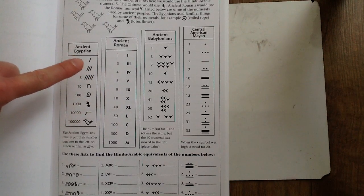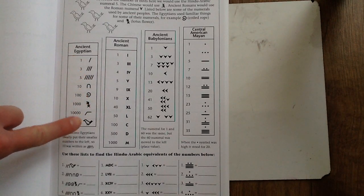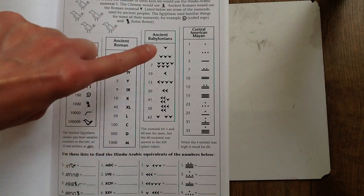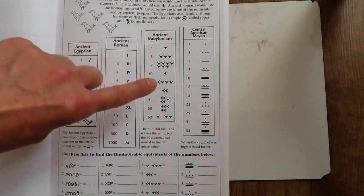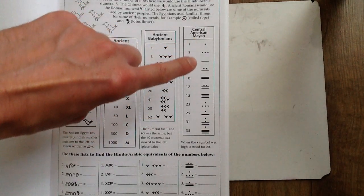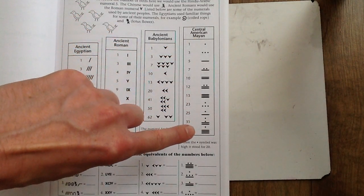Ancient Egyptians used to use signs like this to represent numbers. Ancient Romans used their Roman numerals. Ancient Babylonians used pictures like these, and the Mayans used pictures like these to count.